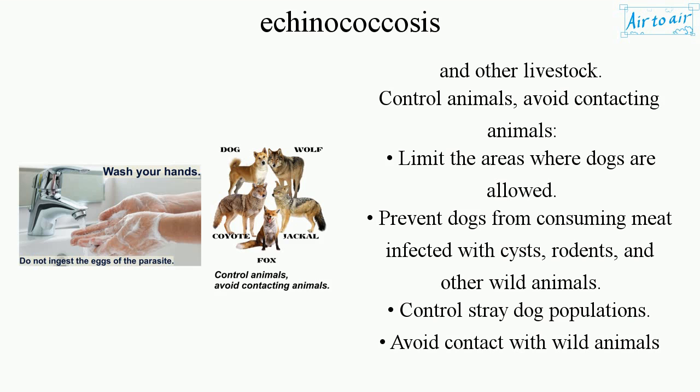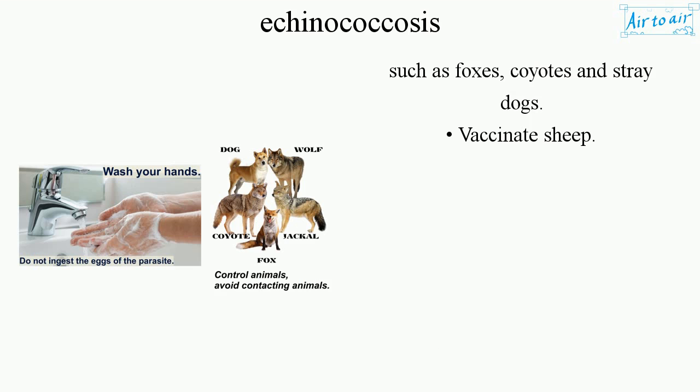Limit the areas where dogs are allowed. Prevent dogs from consuming meat infected with cysts, rodents, and other wild animals. Control stray dog populations. Avoid contact with wild animals such as foxes, coyotes, and stray dogs. Vaccinate sheep.